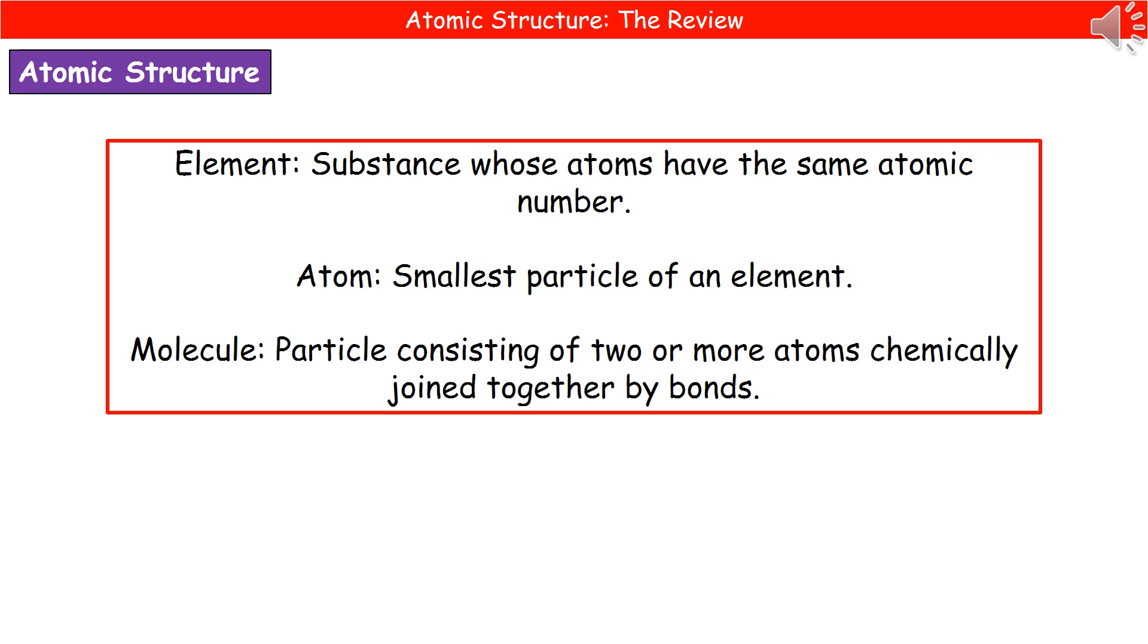So the first one, element, that's just a substance whose atoms have the same atomic number. An atom is the smallest particle of an element, and a molecule is a particle that consists of two or more atoms that have been chemically joined together by these things called bonds.